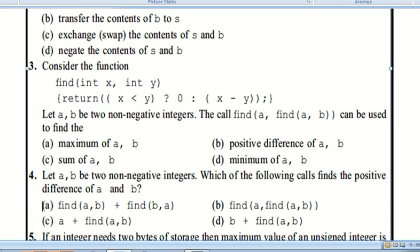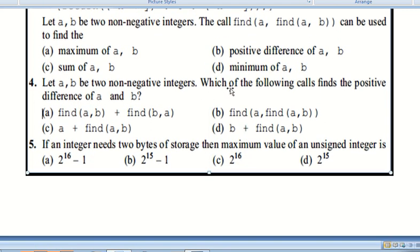Question number four: Let a, b be two non-negative integers. Which of the following calls finds the positive difference of a and b? The correct option is option A: find(a,b) + find(b,a).